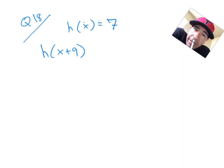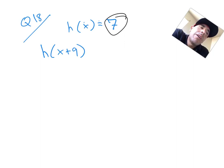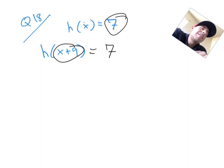This problem is probably bugging you because there is no x value in the function — so whatever they give us, there's nowhere to plug it in. What this is saying is that our y value, our output, is always going to be 7. It doesn't matter what I plug in because my output will always be 7. Here it's saying to plug in x plus 9, but notice there's nowhere to plug it in. So my answer is always going to be 7 — it doesn't matter what is in here, because there's no x value.